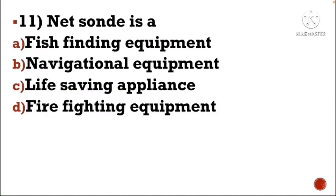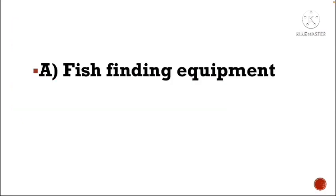Next question: Net sounder is a — Option A: fish finding equipment, Option B: navigational equipment, Option C: life saving appliance, Option D: fire fighting equipment. The correct answer is Option A, fish finding equipment.